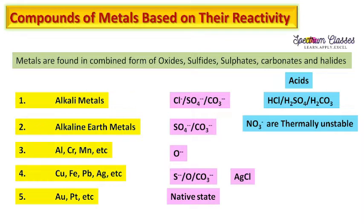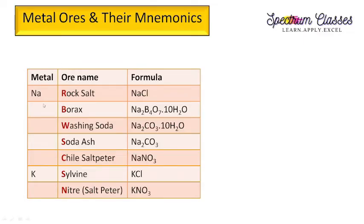All these terms were defined in our previous video. Here we are going to discuss the different important ores of the metals and their mnemonics so we can memorize them for exam purposes. We will summarize the metals and their ores as per the reactivity series. Potassium and sodium are placed first as alkali metals.